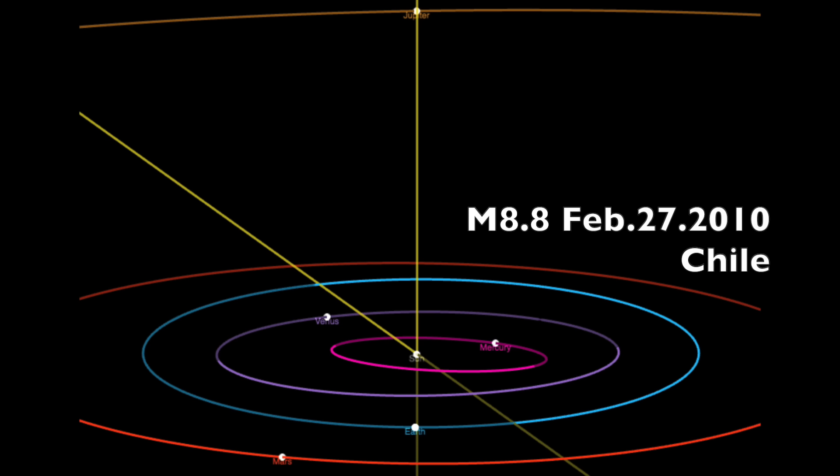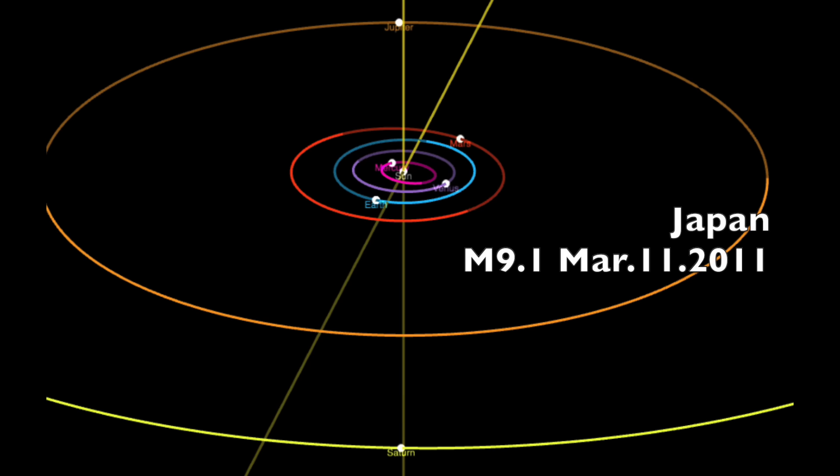The massive magnitude 8.8 in Chile in 2010. Same alignment that's about to happen this weekend. The very next year, the Fukushima disaster nine-pointer in Japan. The Sun and Earth got superactive when the giant planets opposed the Sun.